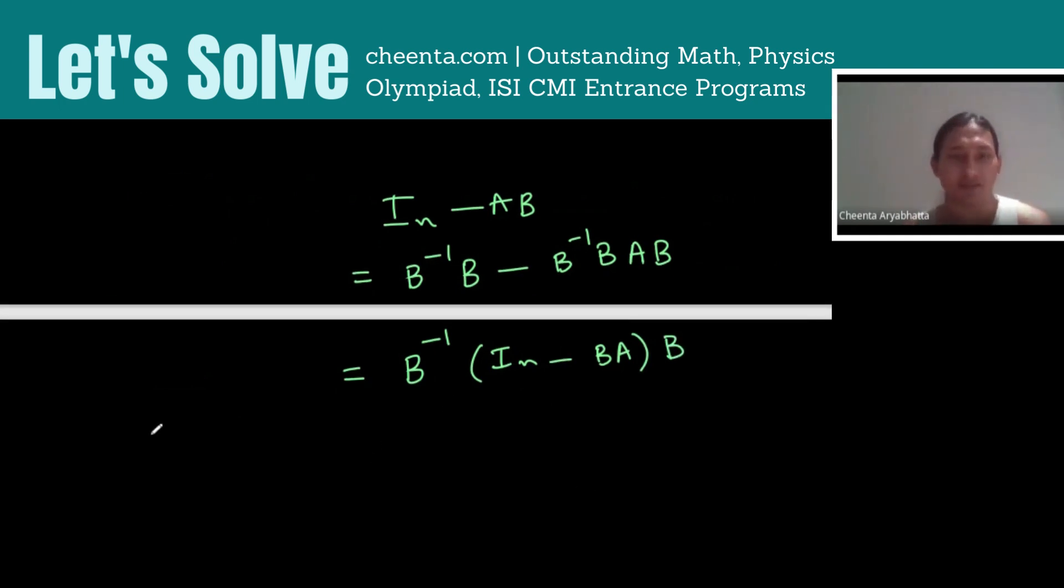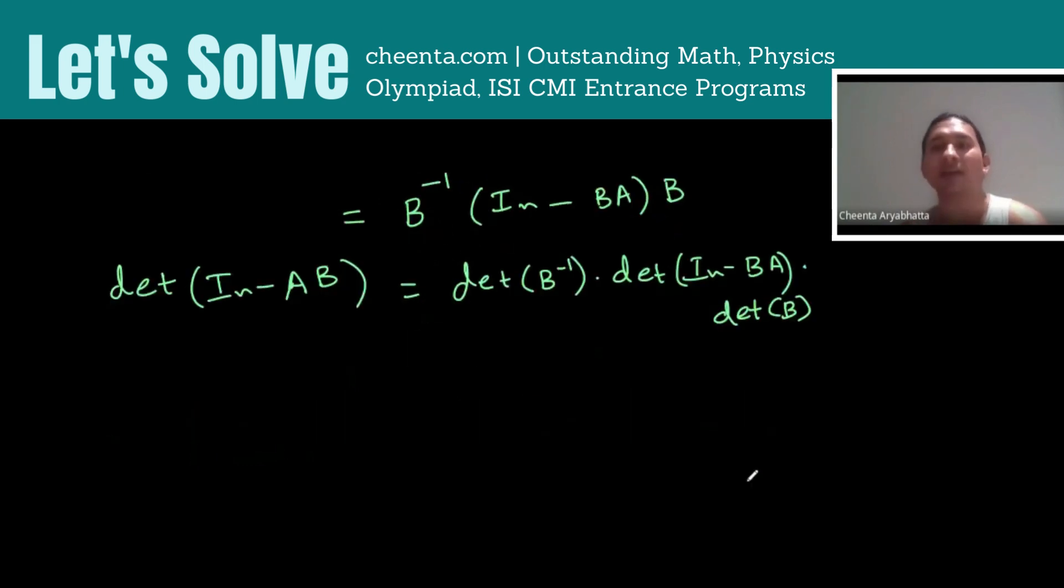Therefore, the determinant of that is determinant of B inverse times determinant of IN minus BA times determinant of B. And as we are dealing with real numbers now, we can rearrange them. We can, for example, bring the determinant of these two together, determinant of B inverse and determinant of B, they give one. So it's equal to determinant of IN minus BA.